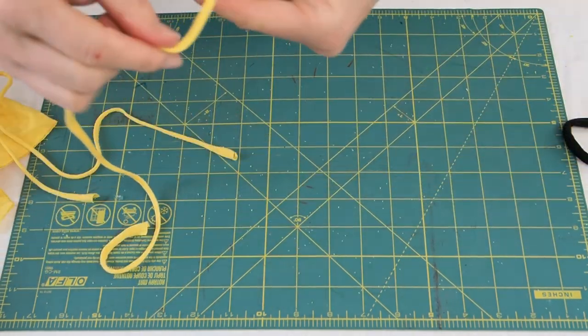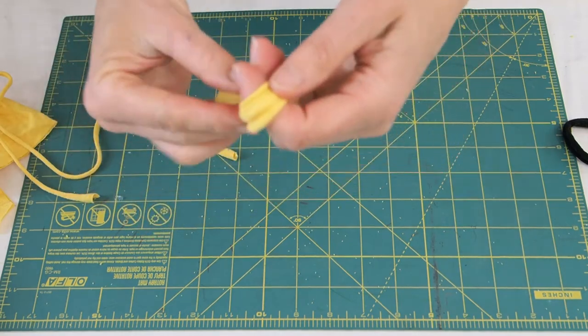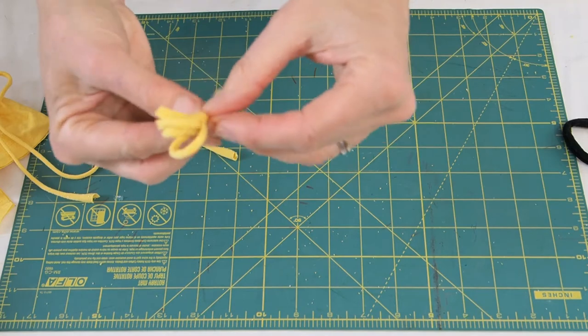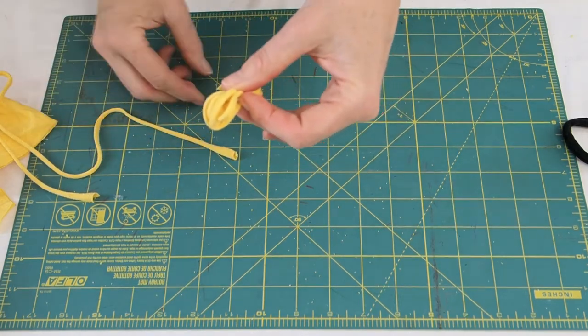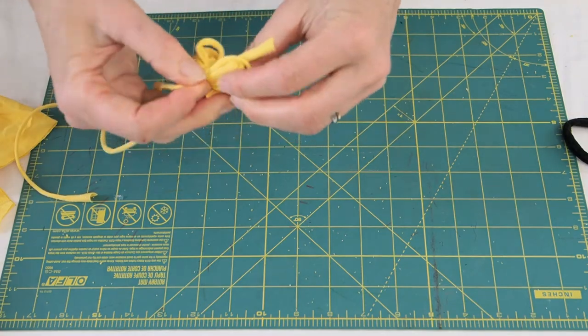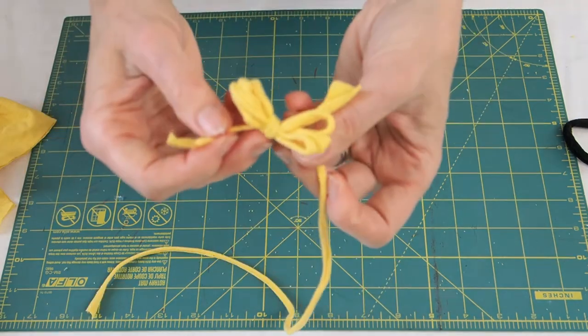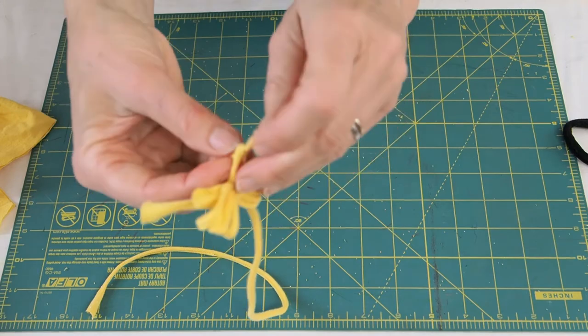Now we're going to take our pom pom yarn and wrap it around three or four of our fingers. It depends on the size of the pom pom you want. Four seems to work best for me. If I use three, it doesn't get quite as poofy in the way I like it. So I'm going to wrap that around my fingers and then I'm going to take that excess piece and tie it up in the middle and make a nice knot there. So I just have a bow tie with a couple little loops on either side.